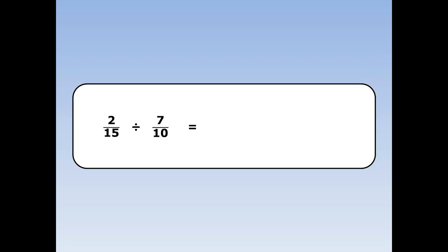2 fifteenths divided by 7 tenths. Turn the second fraction upside down and multiply. 7 tenths turned upside down is 10 sevenths. Now at this point we notice that 15 and 10 can both be divided by 5, so we can cancel.